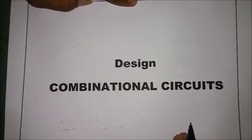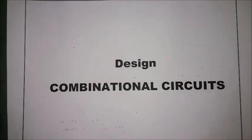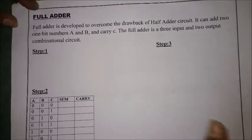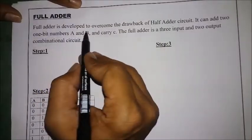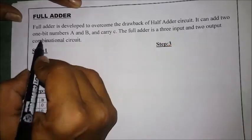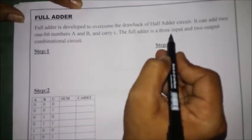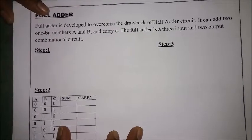In the previous lecture we designed the half adder. Now in this lecture we are going to design a full adder. Before designing, we need to know the specifications. A full adder is developed to overcome the drawbacks of the half adder circuit. It can add two one-bit numbers A and B and a carry C. The full adder is a three-input and two-output combinational circuit.